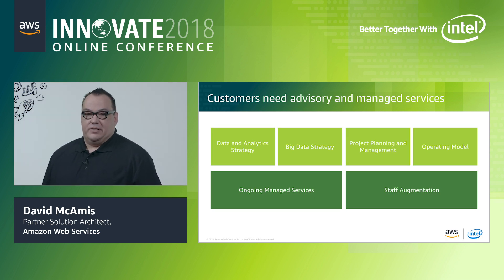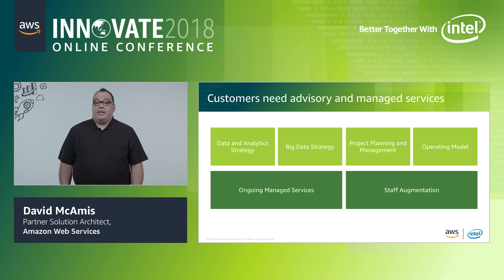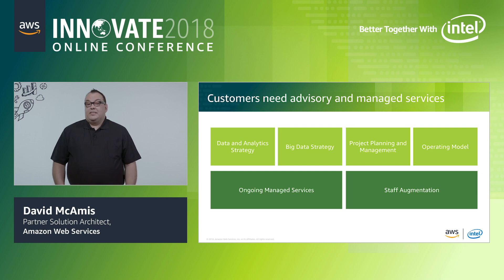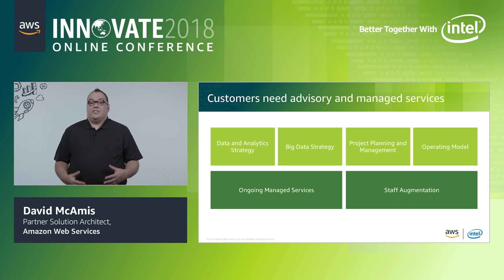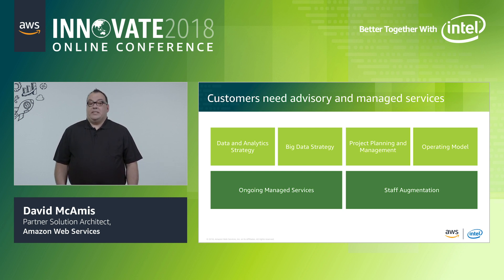Customers also need advisory and managed services. Customers frequently will have a lot of data and not know what to do with it. Our partners are crucial to helping customers develop their own data and analytics strategy and really dive deep on how to start driving business outcomes using all of the data they've collected. Our customers also need help with project planning and management. Our AWS partners bring the skills and expertise from doing these projects over and over again. Another area where partners are key is through ongoing managed services, delivering proactive monitoring, automation, and management of their big data and analytics environment.